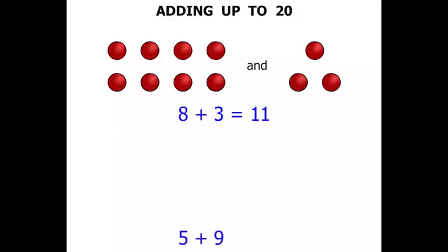Now this next one we've got 5 plus 9. We might use a diagram to help us out. First let's think of 5 — we need to drag in 5 of something. 1, 2, 3, 4, 5. We've brought in 5 hexagons.